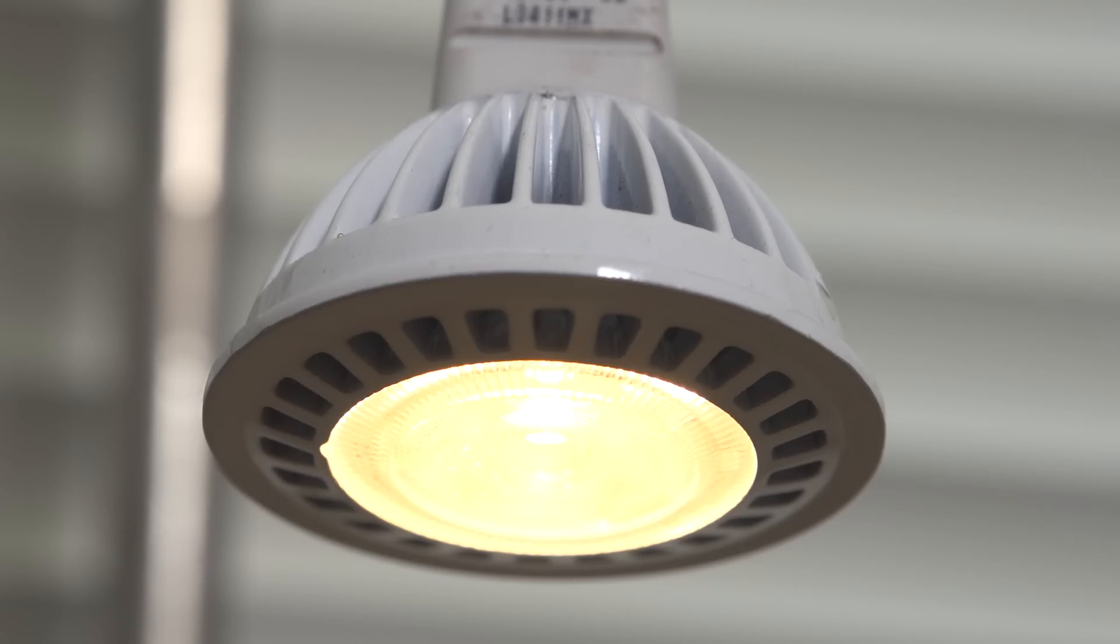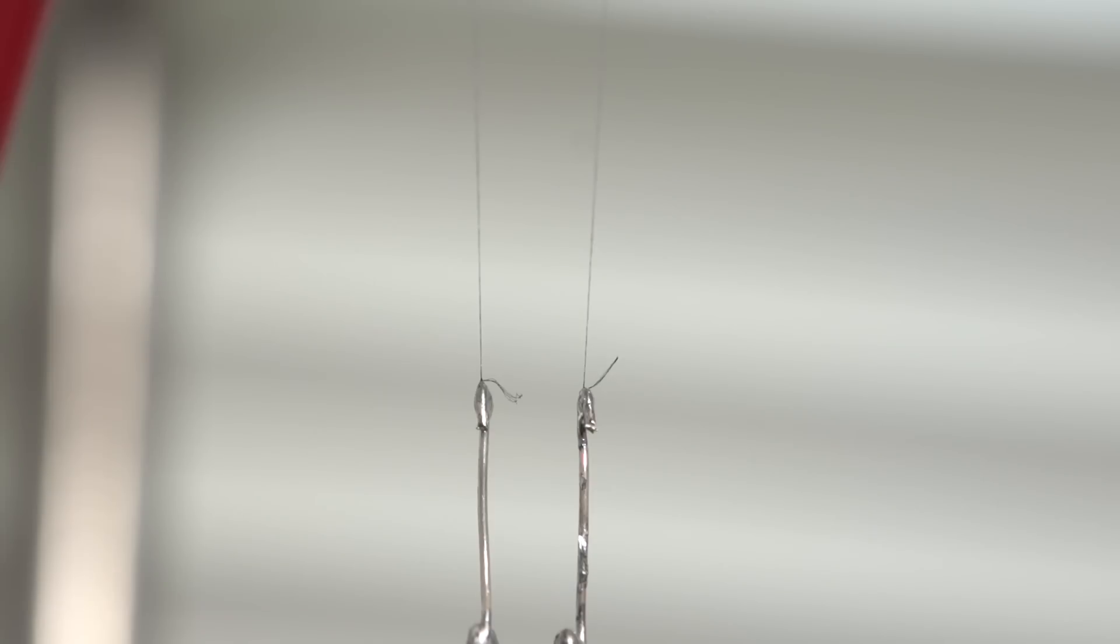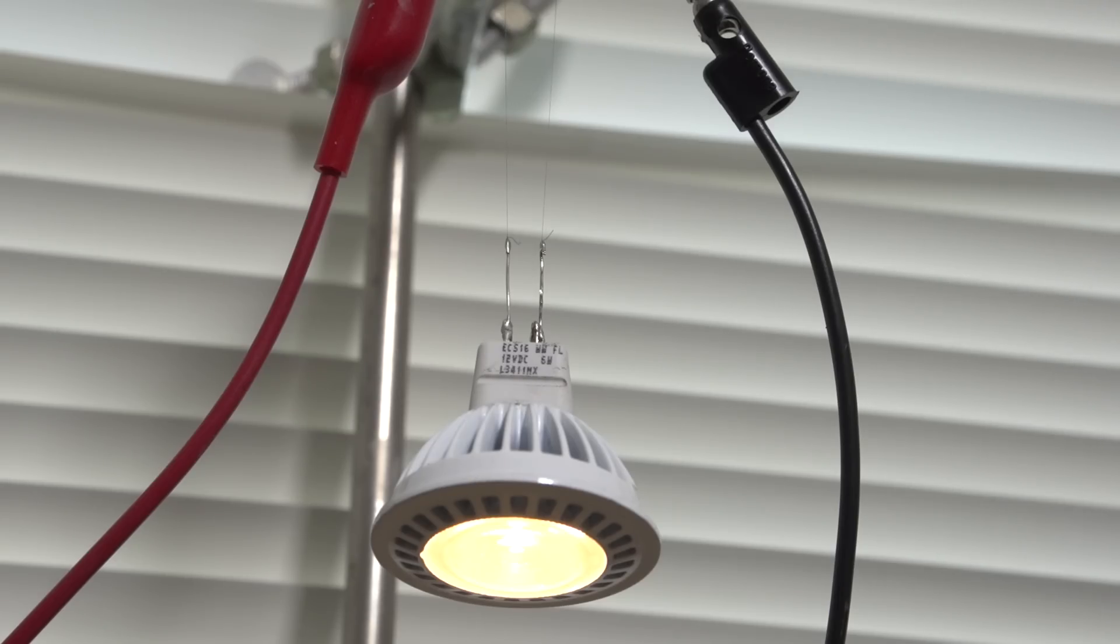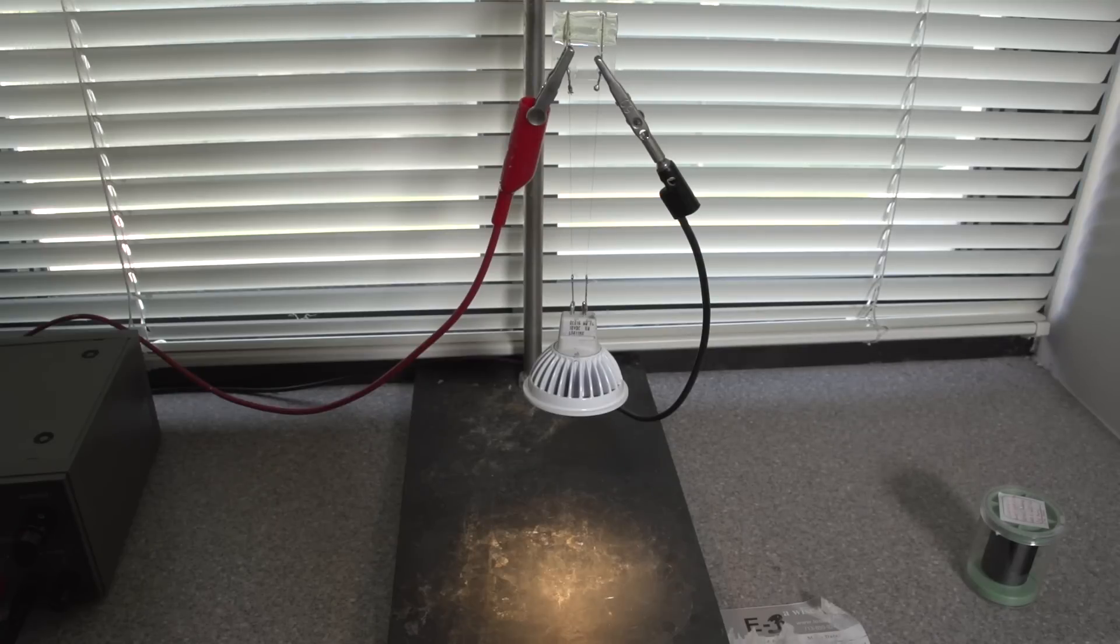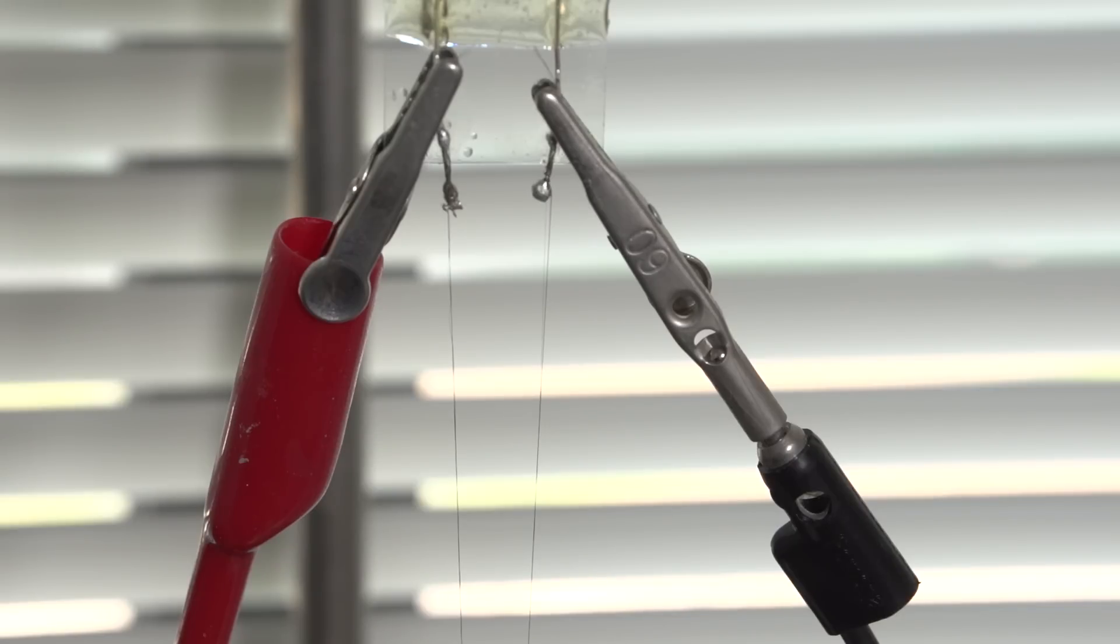What you're looking at here is two bundles of our nanotube fiber that are holding up an LED light bulb that weighs 50 grams. Those fibers are also being used to run the current that's powering the bulb. This demonstrates the multifunctionality of the fibers—they are strong enough to support the weight and have high enough conductivity to provide the current.